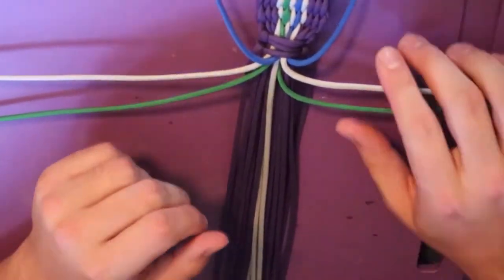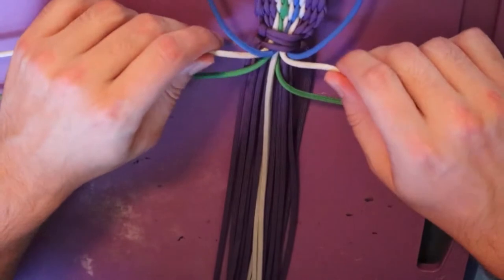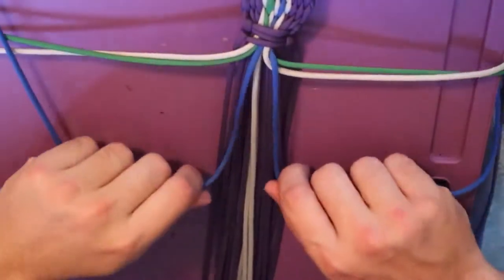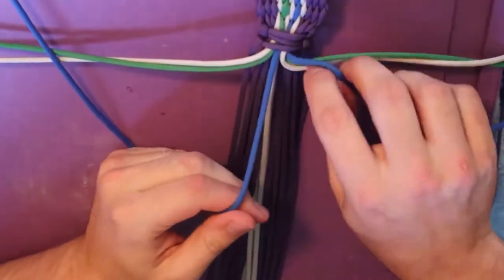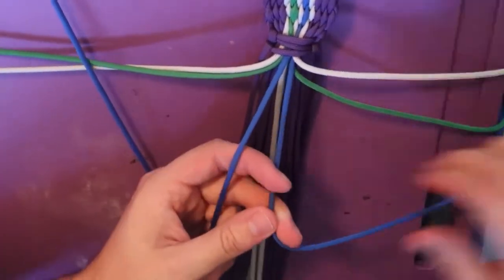So the important part when you do these knots is you make sure that you do them in order. The blue ones are always going to go over. The silver and the green are always going to go under. That will make more sense here in a minute, but I'm going to go ahead and get started.